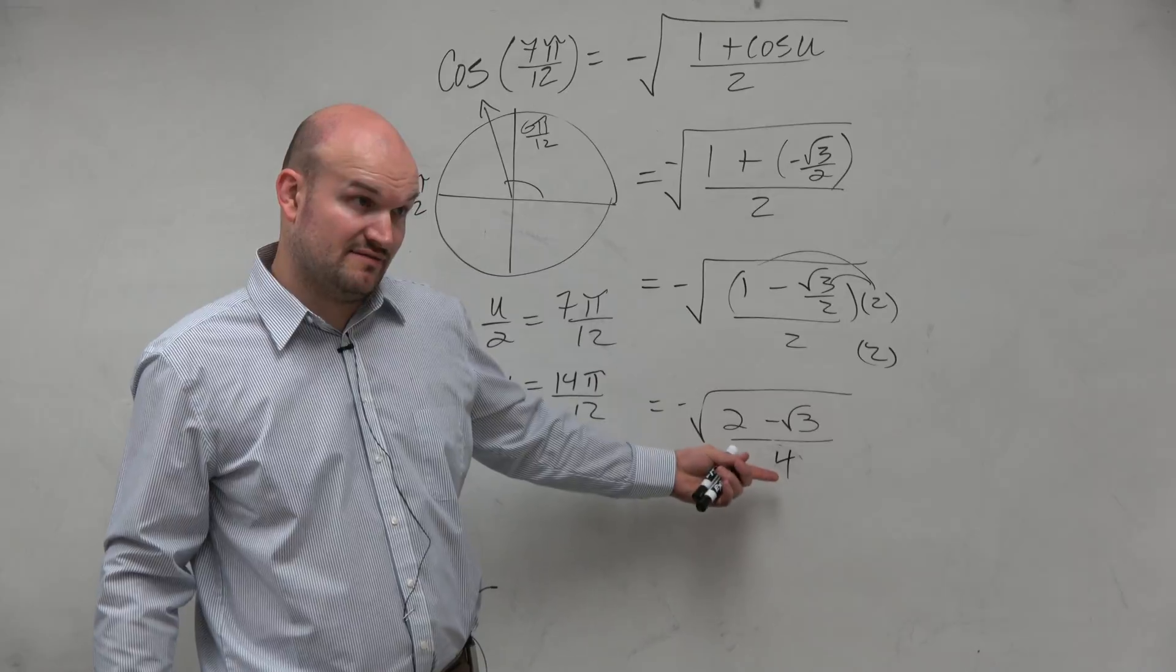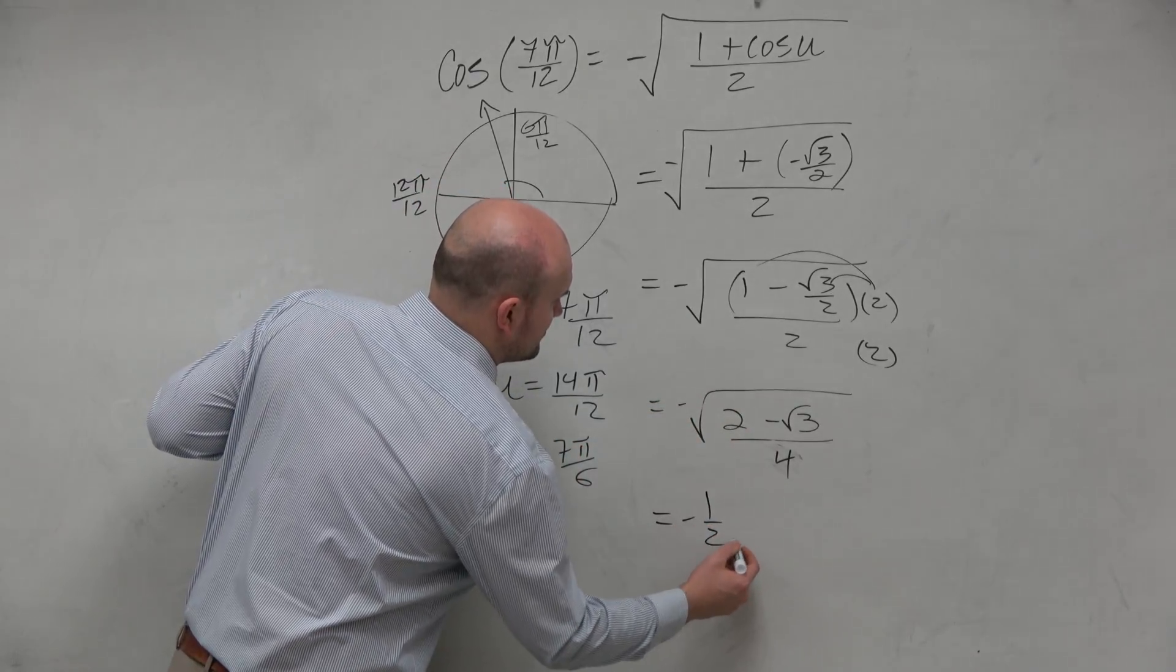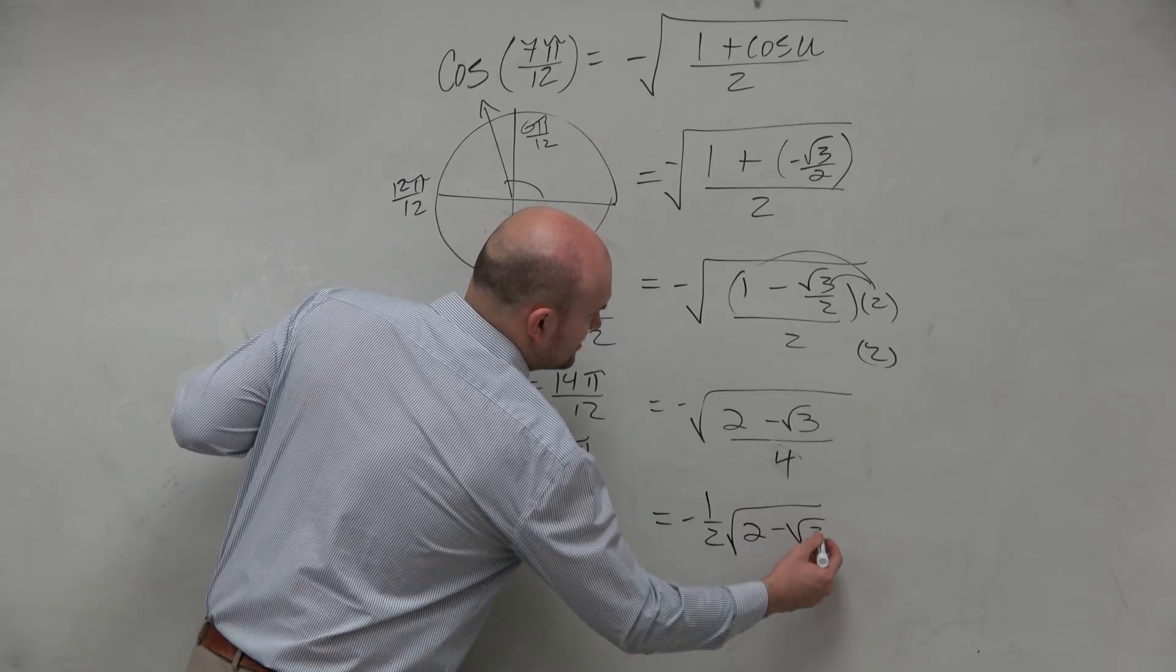And then I can break the square root in the numerator and denominator. Rewrite that as 2. But instead of dividing by 2, I'll just rewrite that as multiplication. So close to the same answer that we had, but not exactly the same.